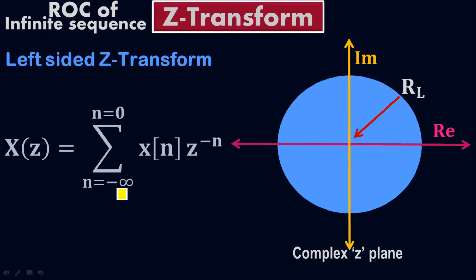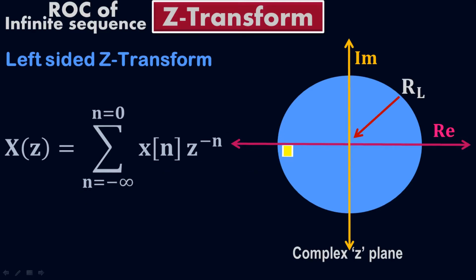We come from negative infinity — from negative values like negative 2, negative 3, negative 10, negative 1,000 — up to 0. You might be confused: if we only have negative values, why is there a circle? The region of convergence for the Z-transform expands throughout the imaginary and real plane, not just the negative side.